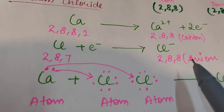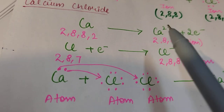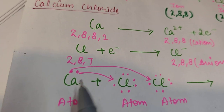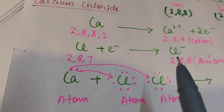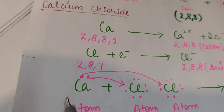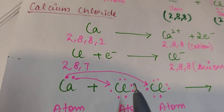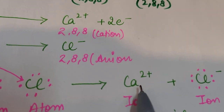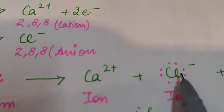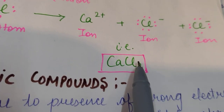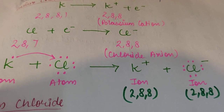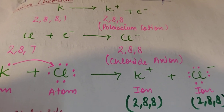Chlorine takes one electron and forms 2,8,8, becoming an anion. Now, calcium has two electrons to give but each chlorine only takes one, so one calcium atom gives its two electrons to two chlorine atoms — one electron to each. This gives us one Ca²⁺ ion and two Cl⁻ ions, which we write as CaCl₂. This is how the formulas we used in ninth class are actually formed.